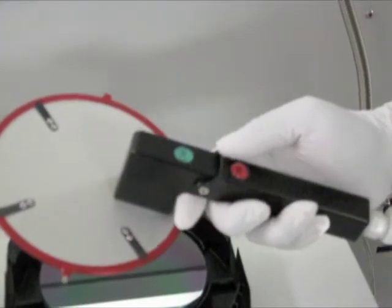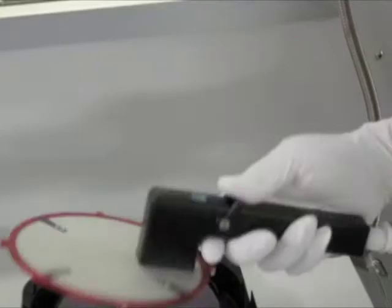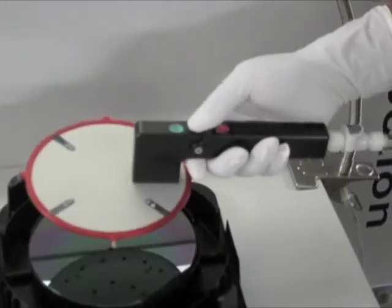To turn the air on, move the air on-off switch to the green position. To turn the air off, move the switch back to the red position.